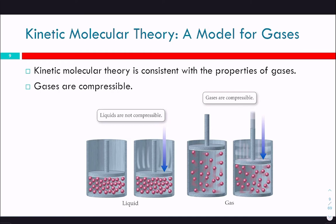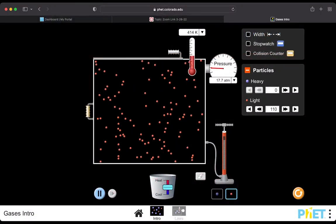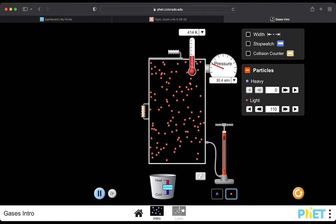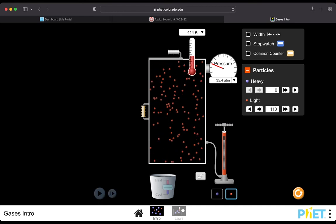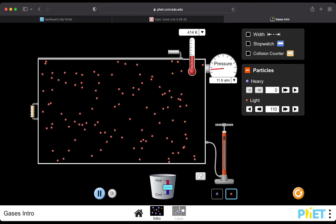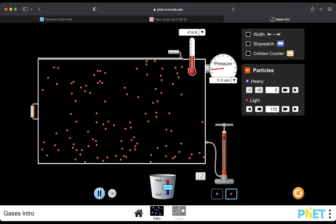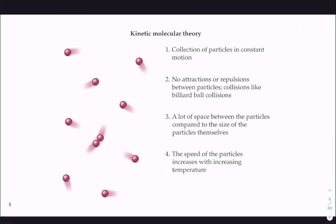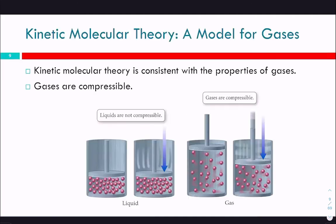Kinetic molecular theory is consistent with properties of gases. Gases are compressible—we can actually compress the size of this container. The pressure right now is 35 atmospheres; we can make it larger and decrease the pressure. Gases are compressible because there's so much space between particles, so we can compress them. In a liquid, particles are already right next to each other, so we can't compress a liquid at all.